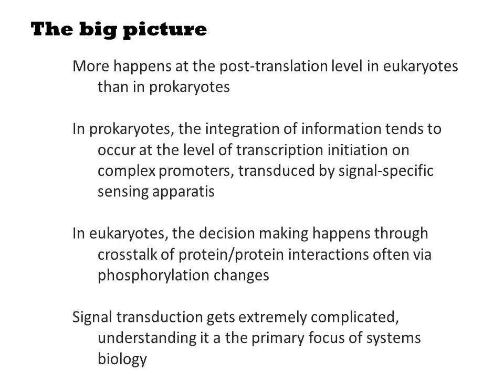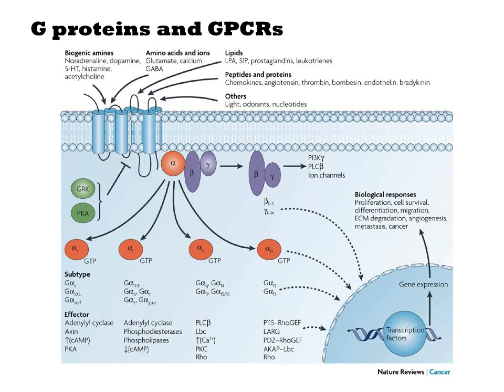Eukaryotic signal transduction gets extremely complicated. Understanding it is the primary focus of systems biology. Here you are looking at G-protein signaling in a GPCR system. The GPCR itself is a multi-pass integral membrane protein with ligand binding sites. When they bind their ligand, they activate a heterotrimeric G-protein by release of its alpha subunit. These alpha subunits can go on to do all sorts of things in the cell — sometimes directly affecting activity of other proteins, while other alpha subunits enter the nucleus and alter gene expression.